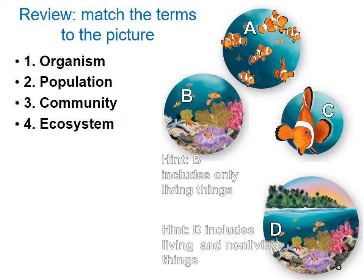An organism is an individual, so the single clownfish by itself is the organism — that's picture C. A population is a group of organisms of the same species that can interbreed in a specific location, so picture A is our population example. Picture B shows only living things, representing community ecology, and picture D includes living and non-living things, representing ecosystem ecology.